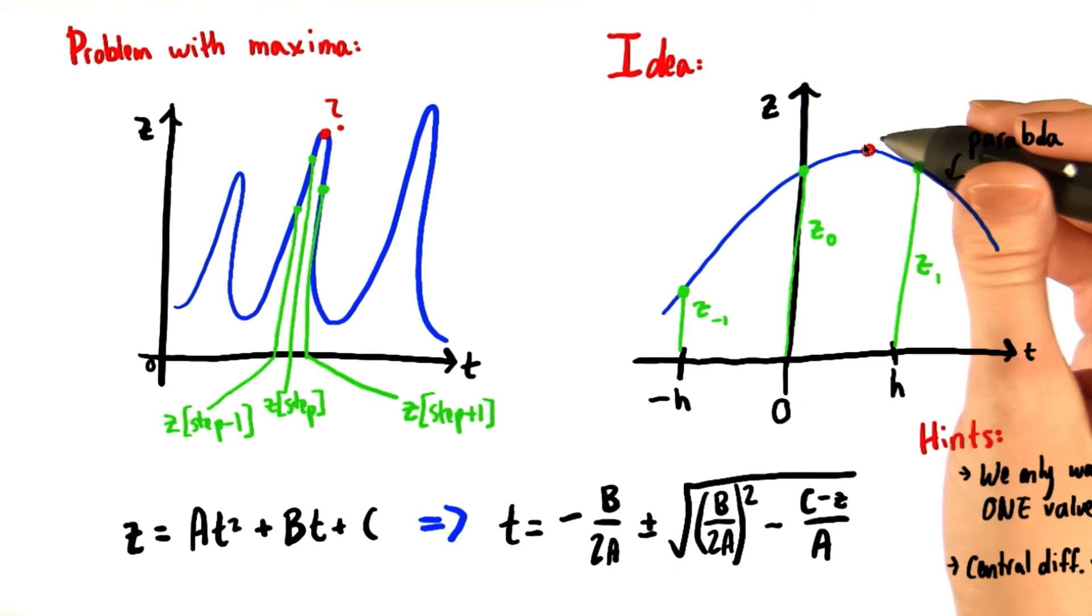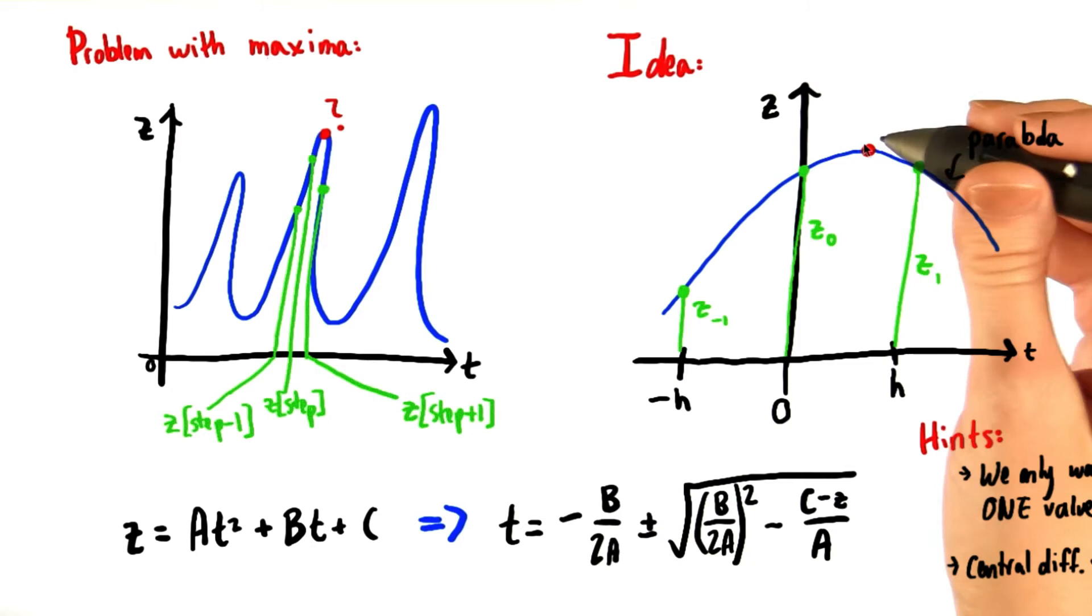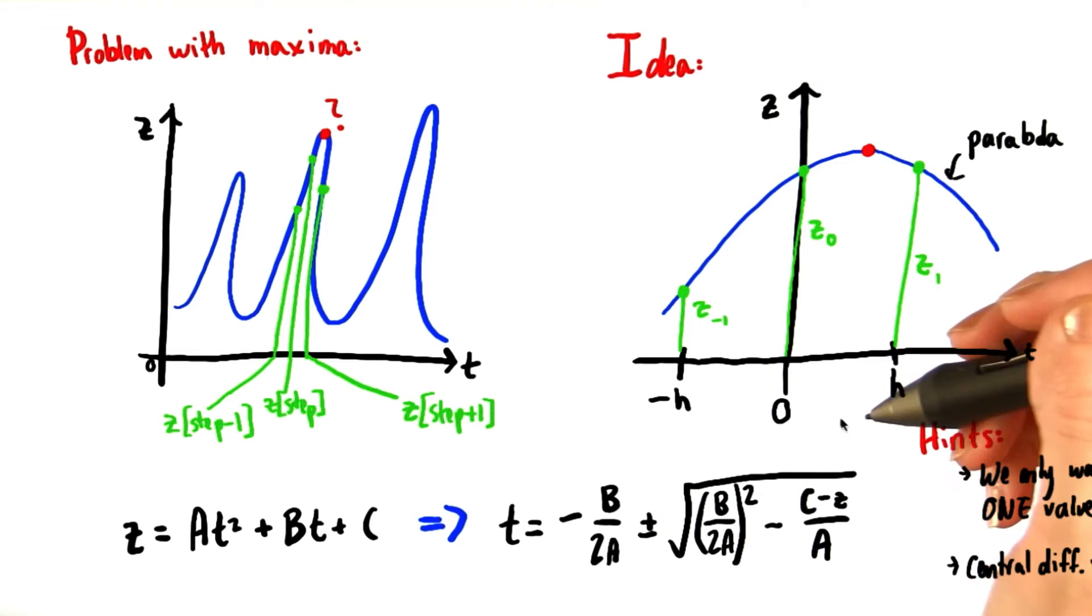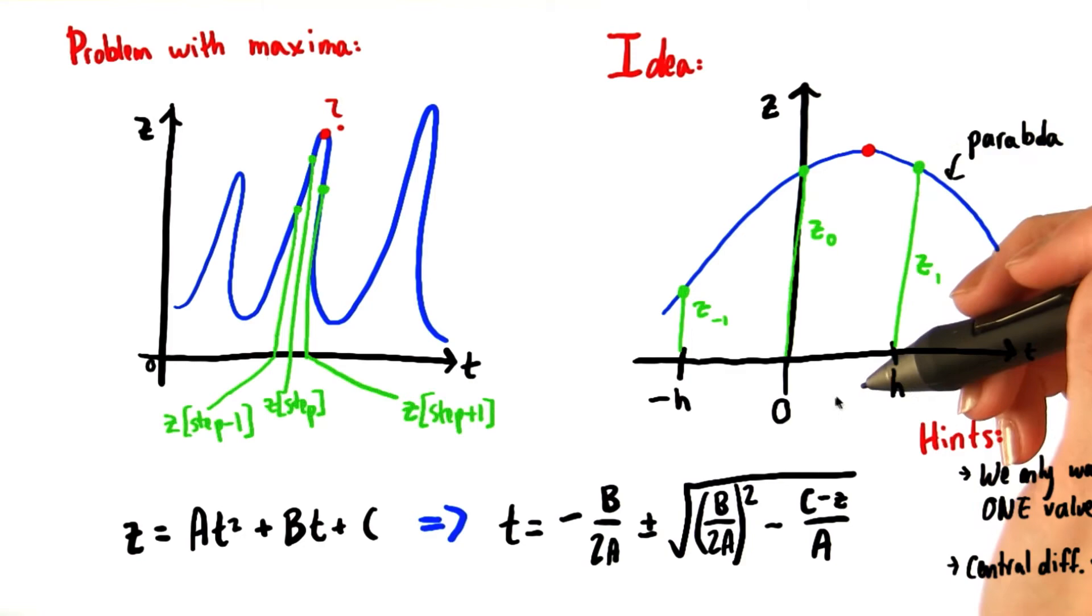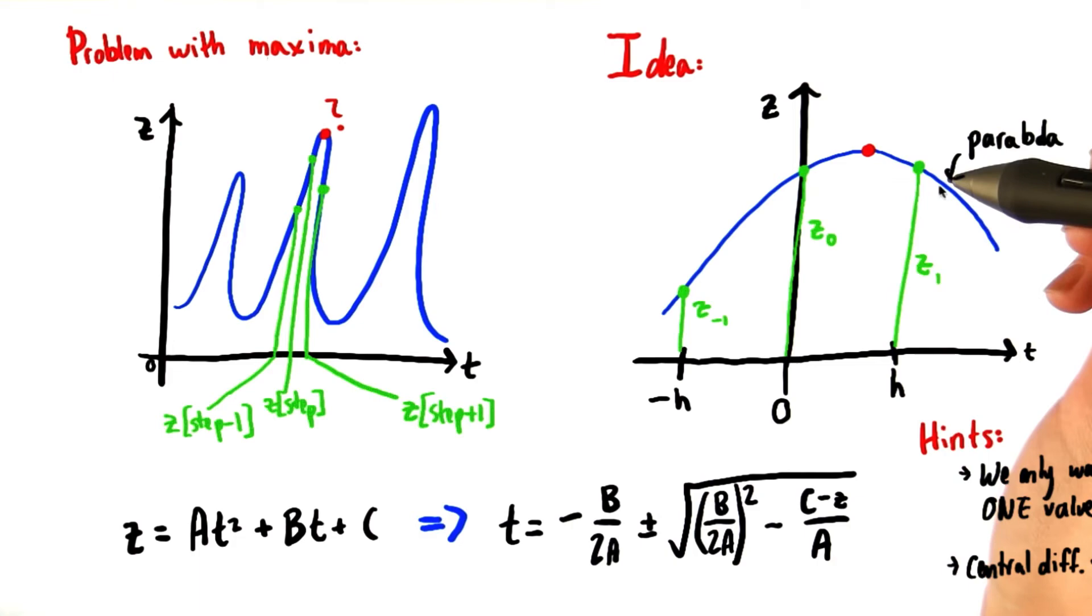Just a couple of hints for you. We want only one z value to be equal to the maximum. So think about what that means in terms of our equations down here. Also, think about how you could use the central difference formula when you're discussing these local maxima. Remember that one way to calculate a, b, and c is to plug in information about the points that you know. Then you'll have these coefficients and be able to find the proper value of z and t.